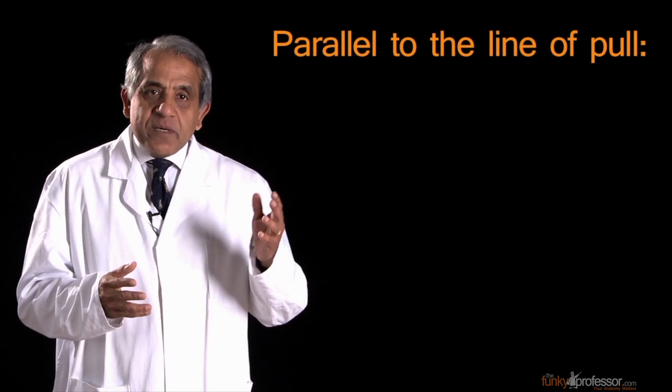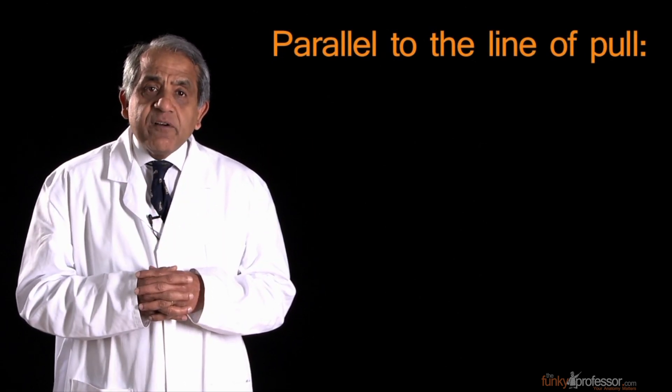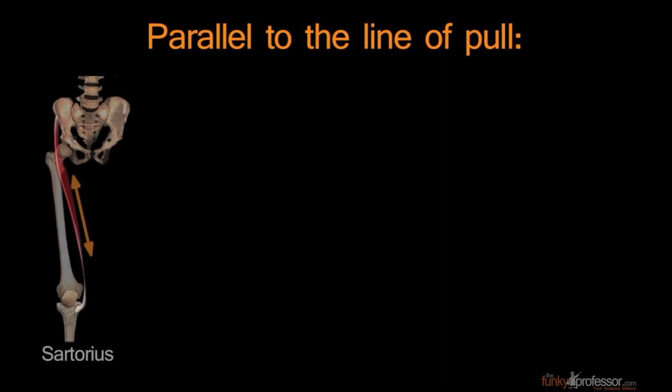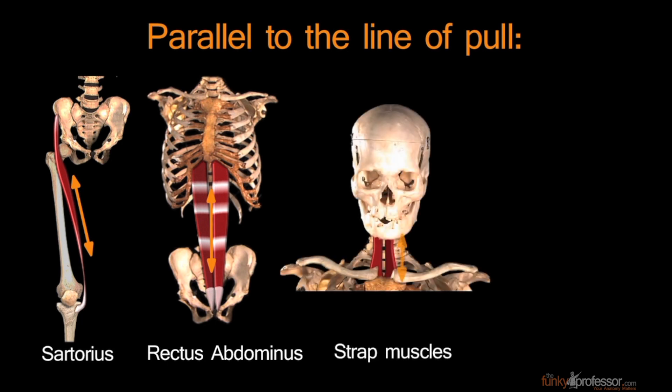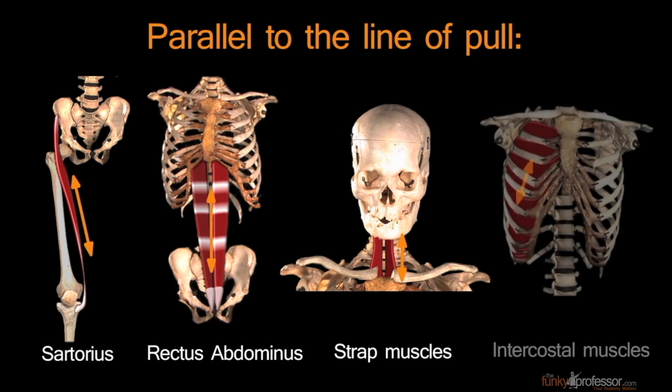Examples of the former type, which is to say where the muscle fibers are arranged parallel to the line of pull, are the sartorius, the rectus abdominis, the powerful muscle in the anterior abdominal wall, the strap muscles in the neck, and indeed the intercostal muscles.